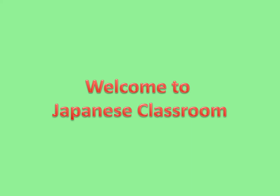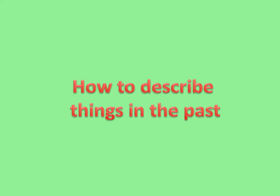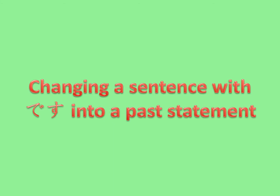Welcome to Japanese Classroom. This lesson is about how to describe things in the past. You have learned to describe people and things with the word desu before. Now, let's learn to change a sentence with desu into a past statement.